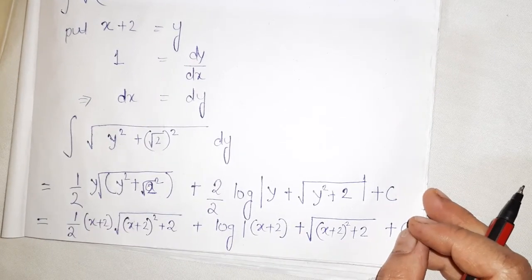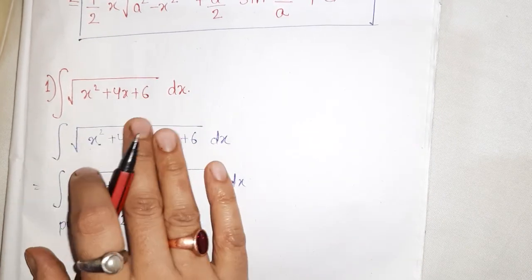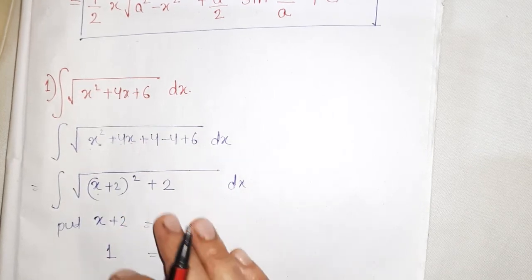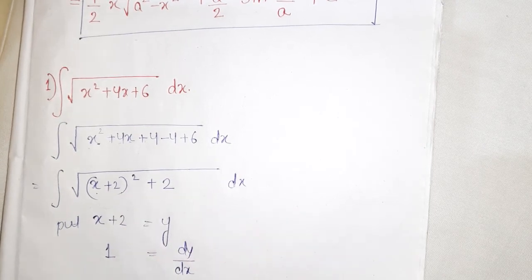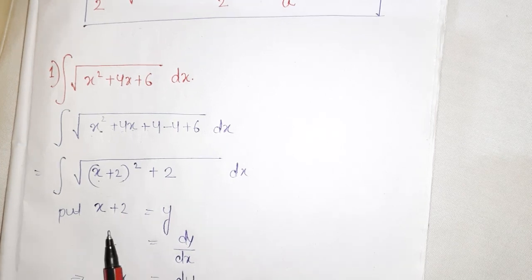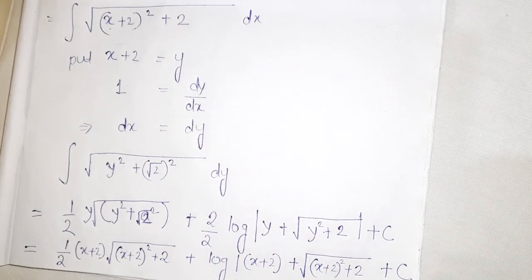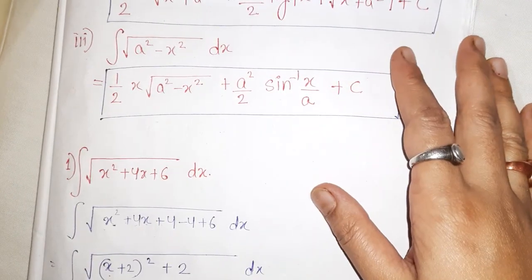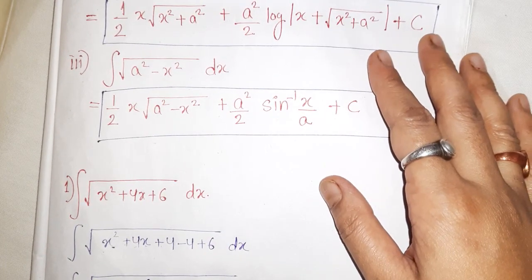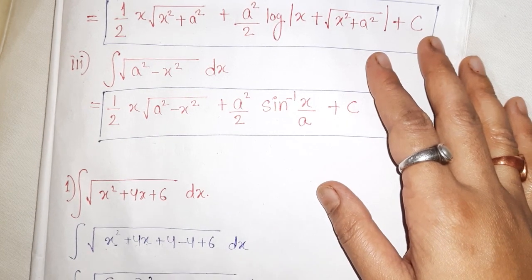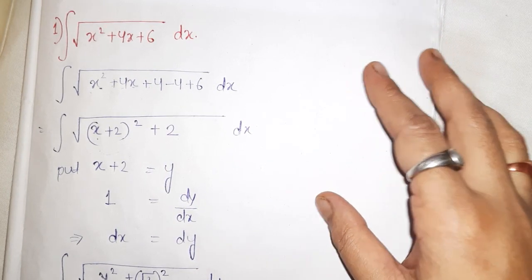These problems are very easy — you just need to make the expression into the standard form by completing the perfect square, then apply the standard integral formula. Substituting a new variable makes it easier, and at the end you replace back. This is all about integration by parts. In the next class we will do more problems on these standard integrals, after which the topic of indefinite integration will be completed and we will start definite integrals. Thank you.